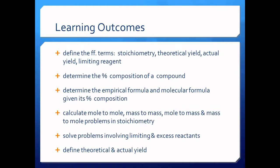When we end this topic, you should be able to define the term stoichiometry, the theoretical yield, the actual yield, and the limiting reagent — or what we call the limiting reactant. You should also be able to determine the percent composition of a compound. Percent composition is simple: divide the amount of a particular constituent by the total amount of the compound, and that gives you the percentage composition.